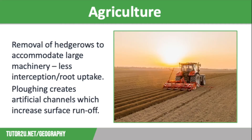Finally, let's consider how agriculture increases the risk of flooding. Mechanisation of farming means that hedges have been removed to make huge fields, which make farming more efficient due to the use of large machines. If there are fewer hedges, then less interception and root uptake can occur.